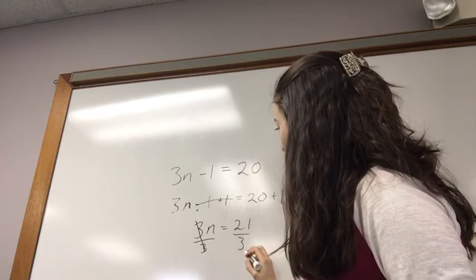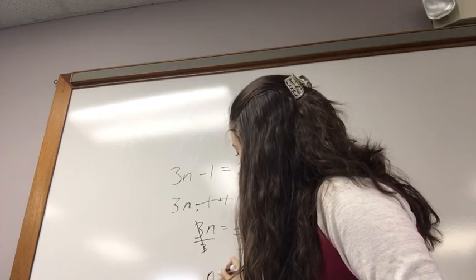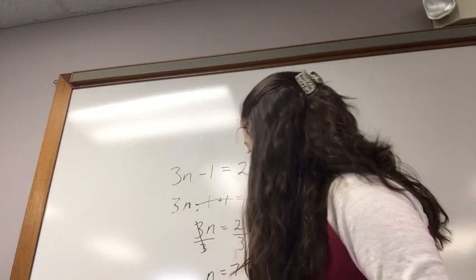21 divided by 3 is 7. So, that leaves us with n equals 7.